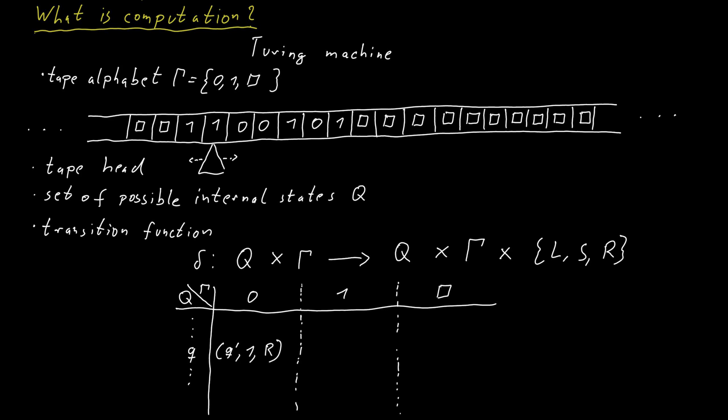So to specify a particular Turing machine, we need to specify the tape alphabet. The standard tape alphabet is just 0, 1, blank. We need to specify the set of internal states of the machine Q and we need to specify the entire transition function delta.